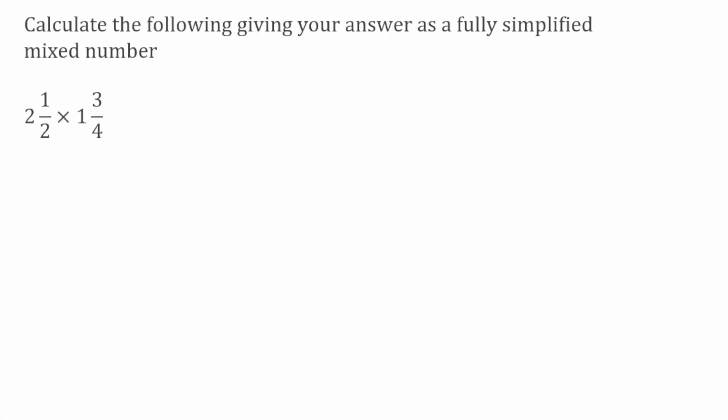For today's video we're going to be taking a look at multiplying mixed numbers. When we've got a question where we're going to multiply mixed numbers, what we're actually going to do first is convert them into improper fractions. Once we've done that, we can treat this like a normal multiplying fractions question, where we just multiply the numerators together and then the denominators together. Once we've done that, we can then simplify and turn back into a mixed number.